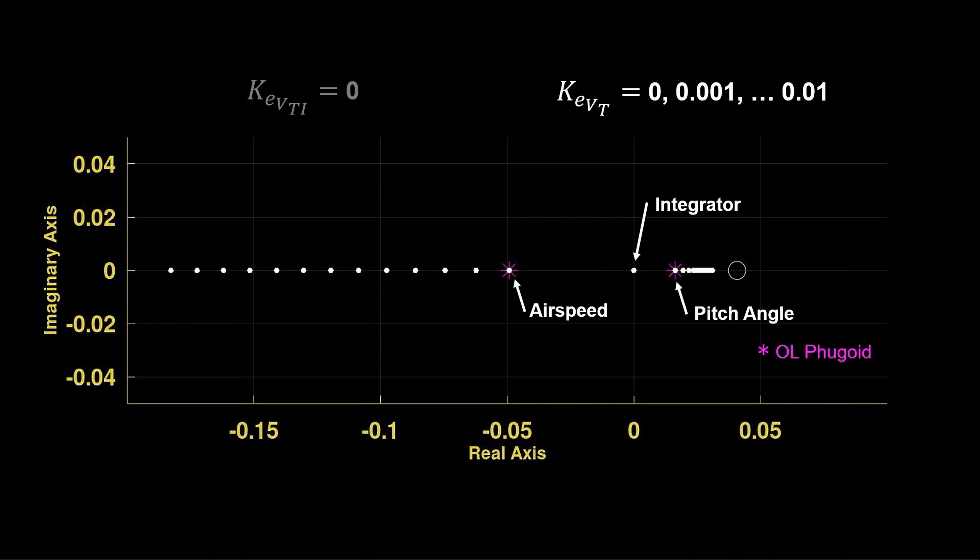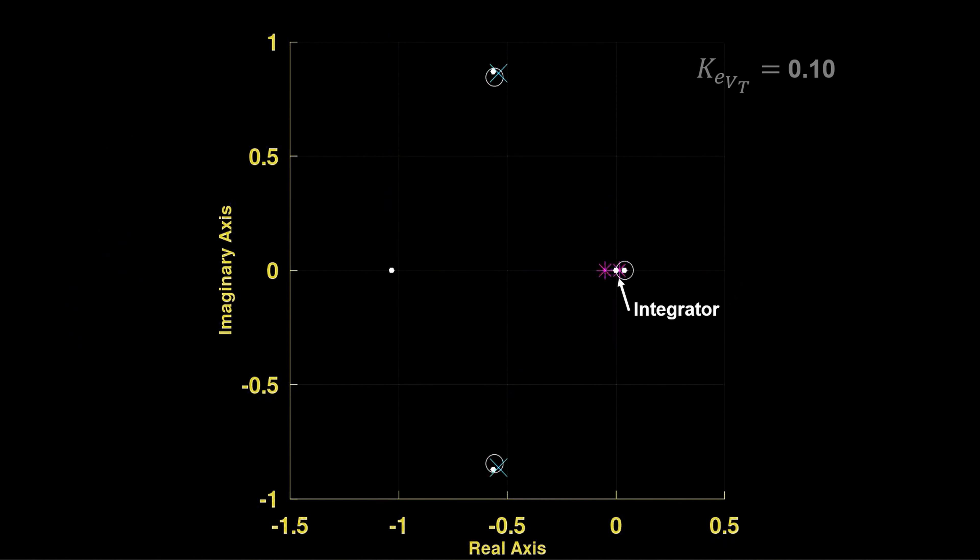As expected, the pitch angle is approaching the right half plane zero. The airspeed moves into the left half plane, consistent with faster tracking. And the integrator pole is stationary, since the integral air gain is zero. We set a proportional gain of 0.1, which puts the airspeed pole just left of minus one. The short period remains near the open loop zeros.